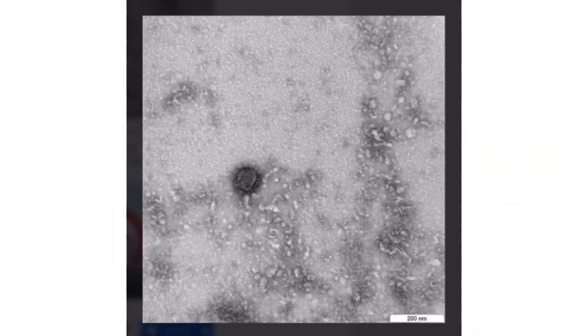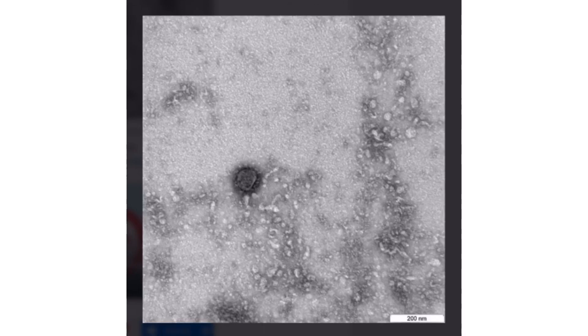It is critically important to be able to determine the path of its spread and entry into the territory of Russia, as well as its changes. This information will help in the development of vaccines and antiviral drugs for the treatment of coronavirus.